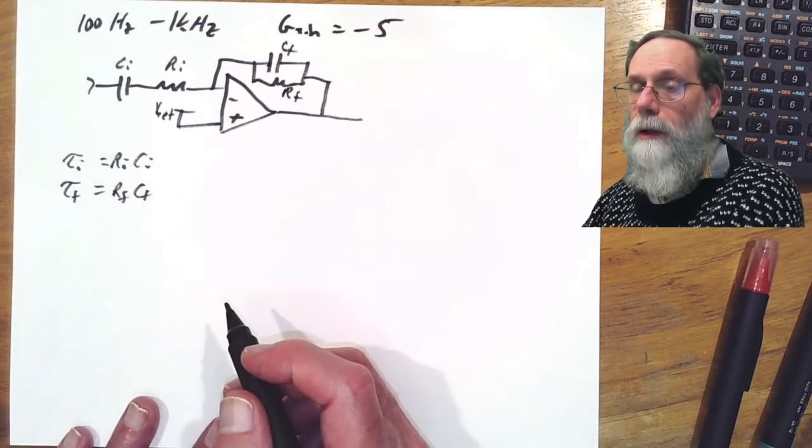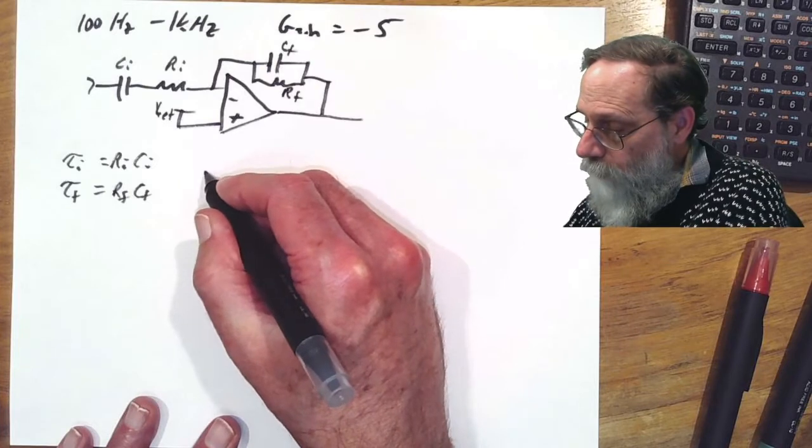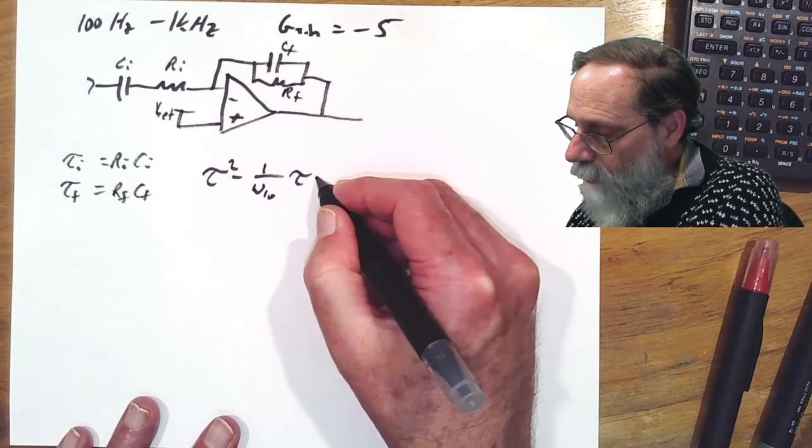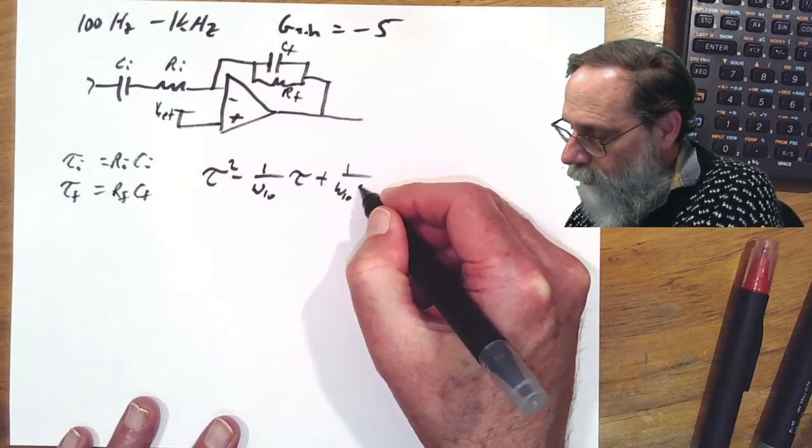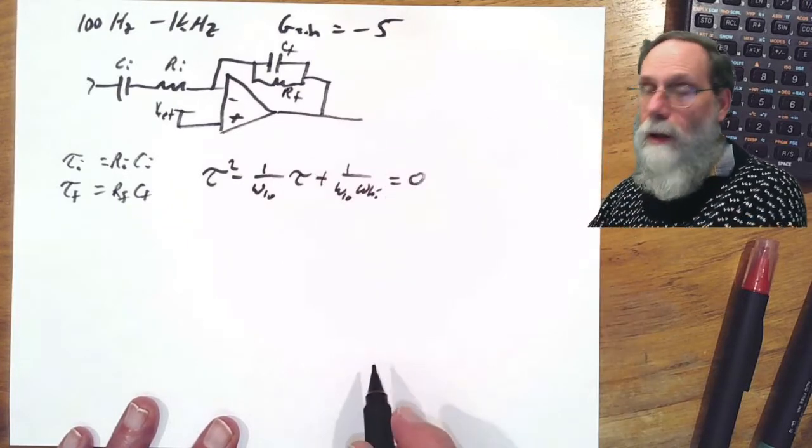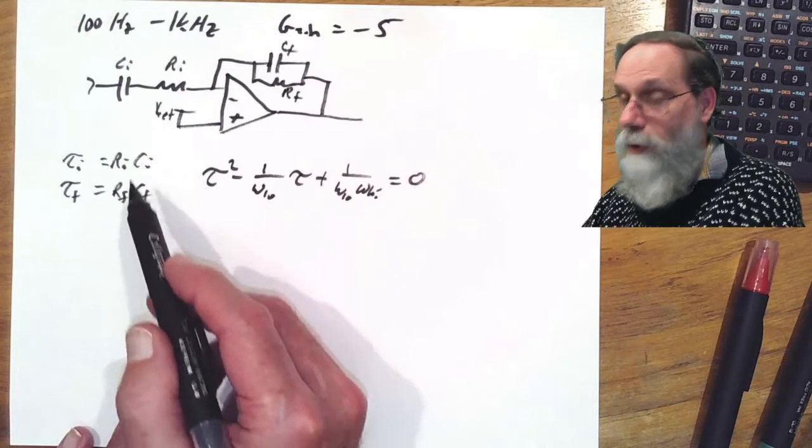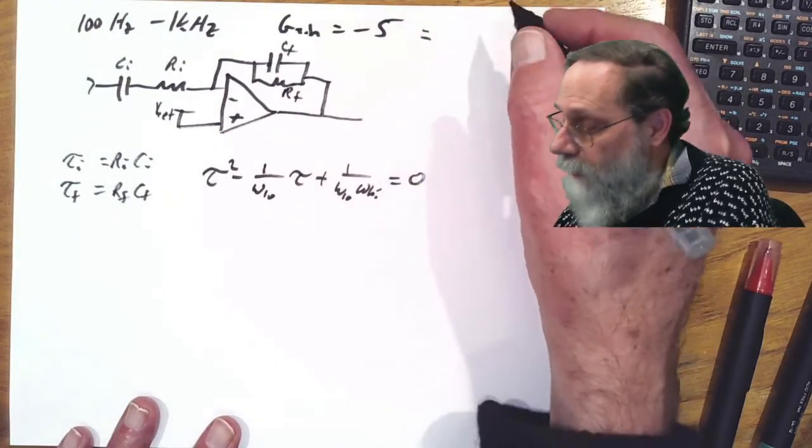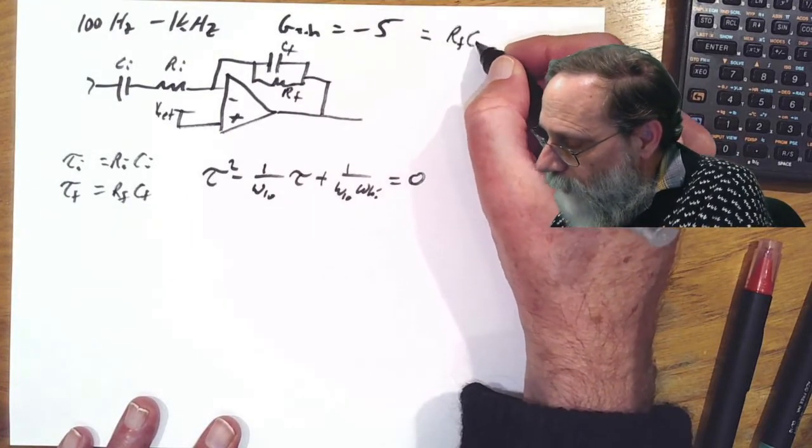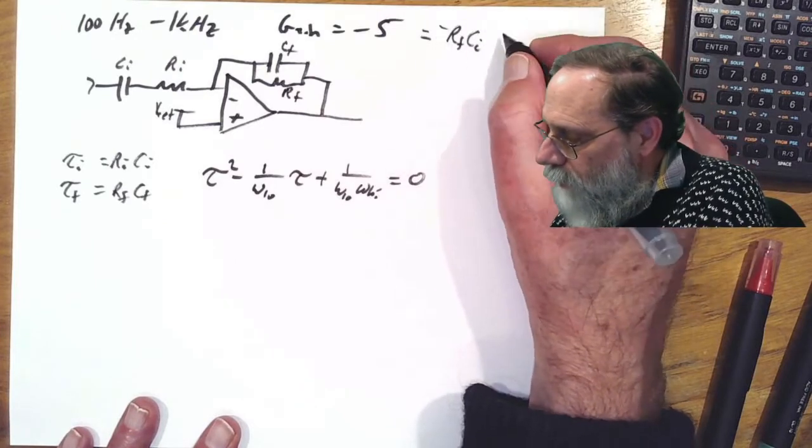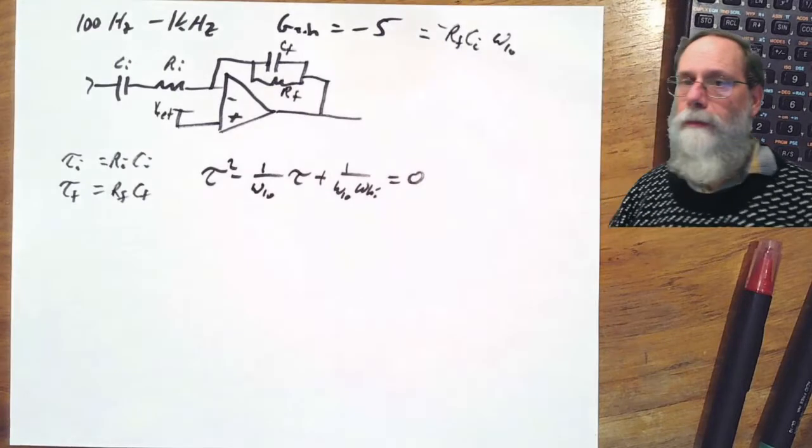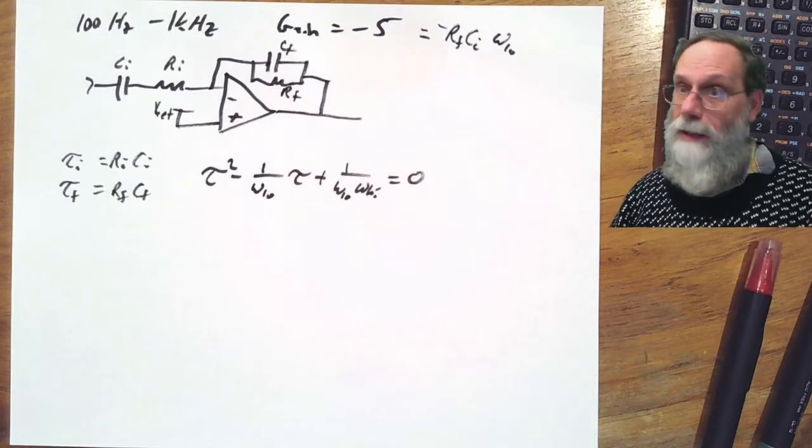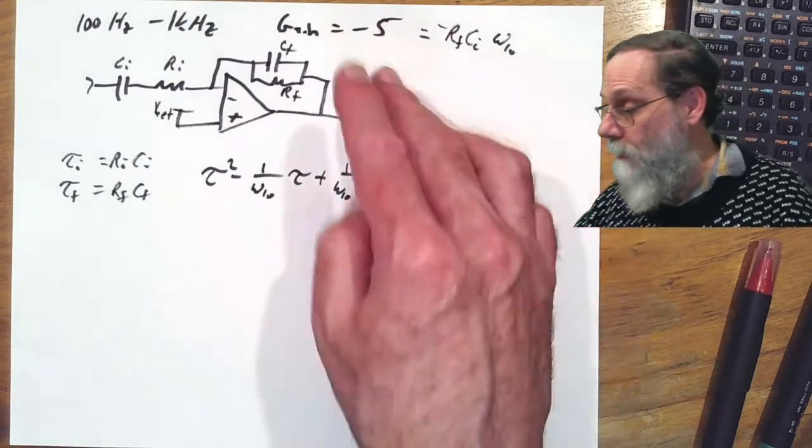We had these two time constants were the roots of a quadratic equation, Tau squared minus 1 over omega low times Tau plus 1 over omega low, omega high. So we have that quadratic equation to determine what these two time constants are. It doesn't tell us which one's which, just those are the two. And we have that the gain can also be written as minus RfCi times omega low. So we can now get three time constants.